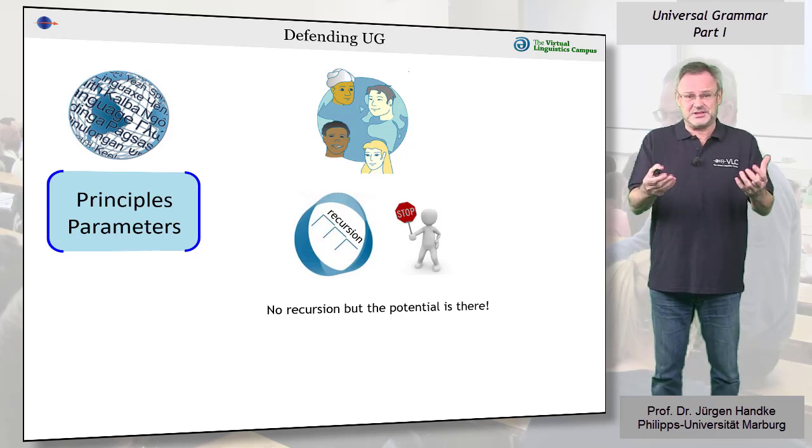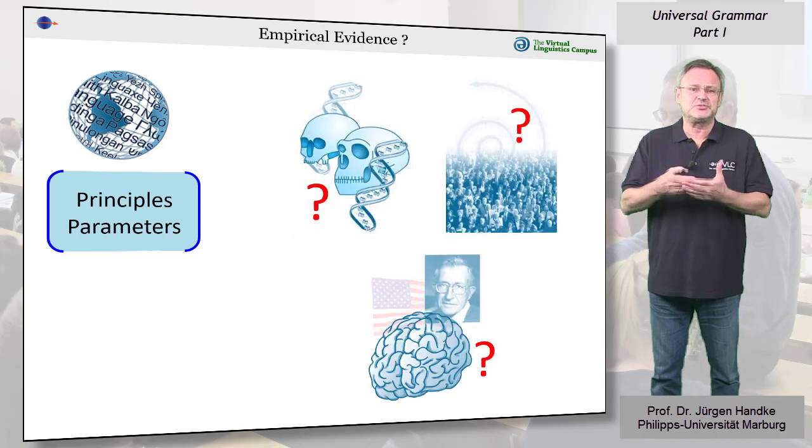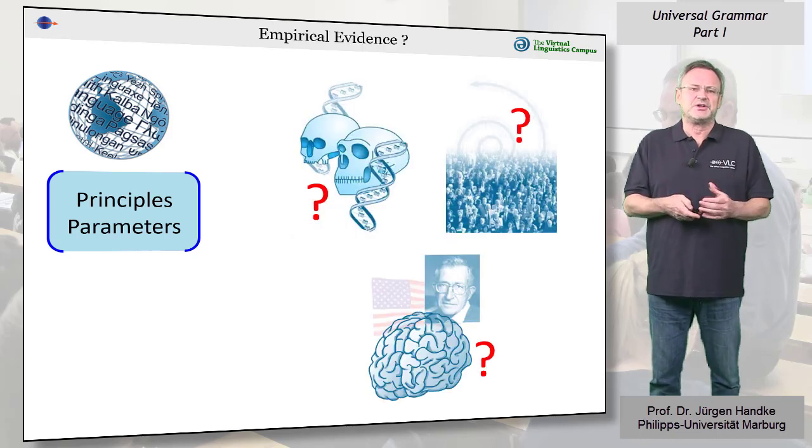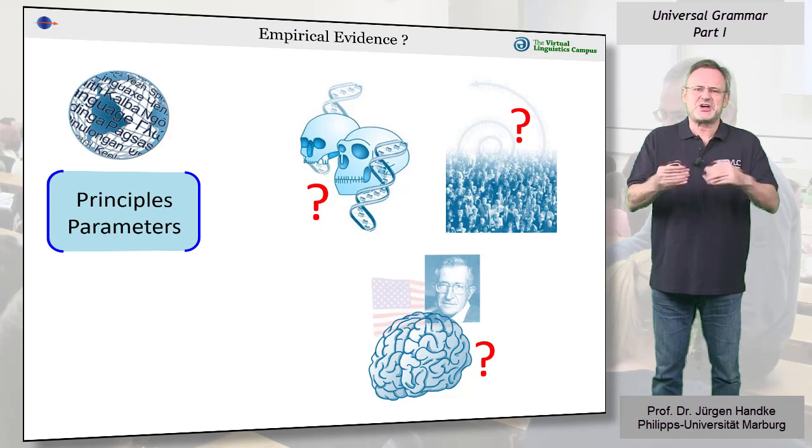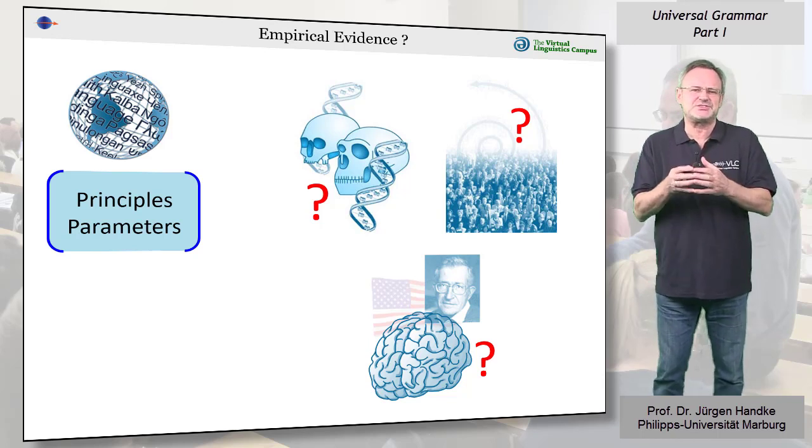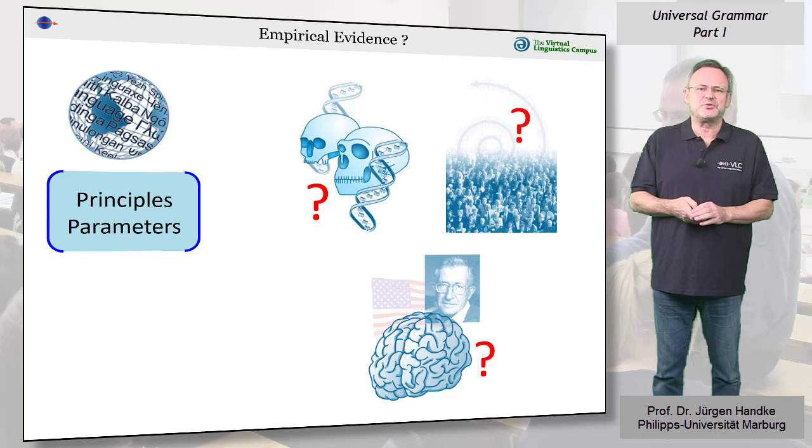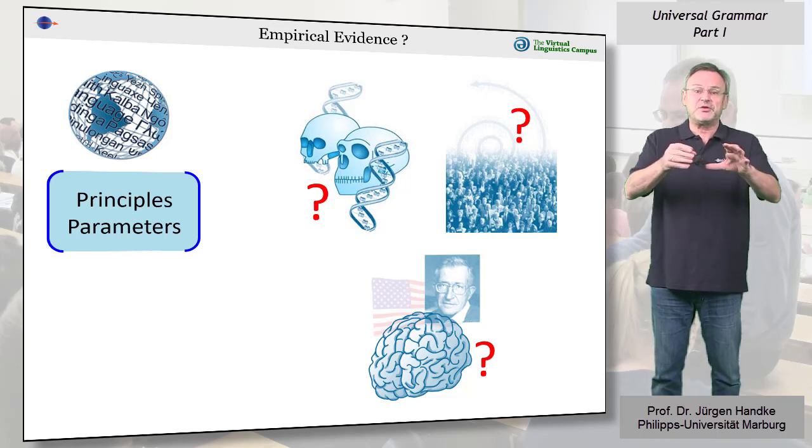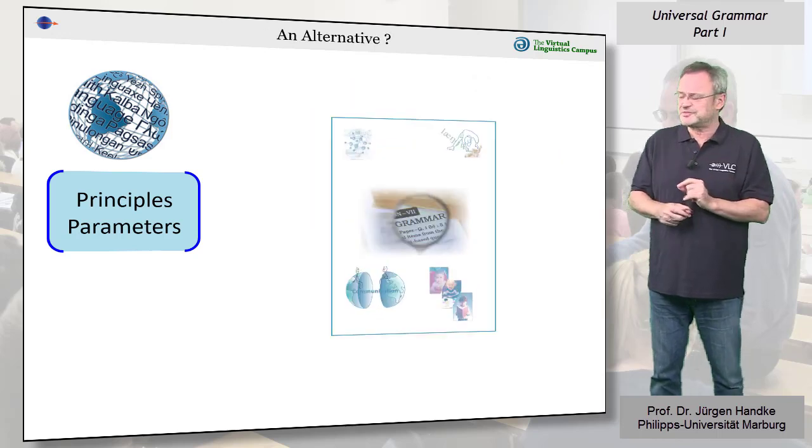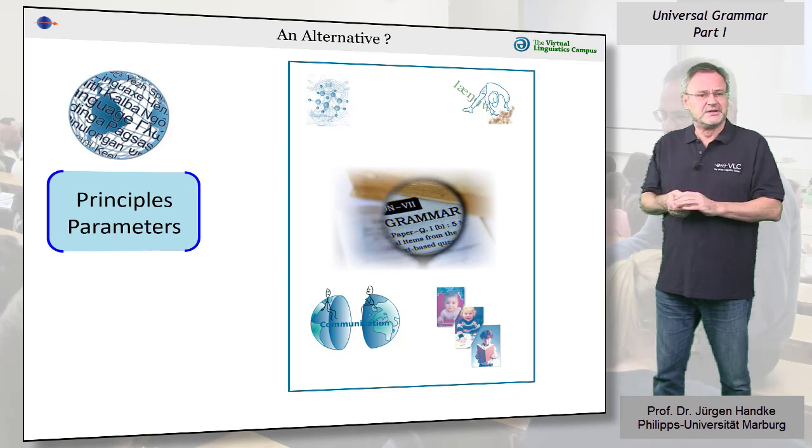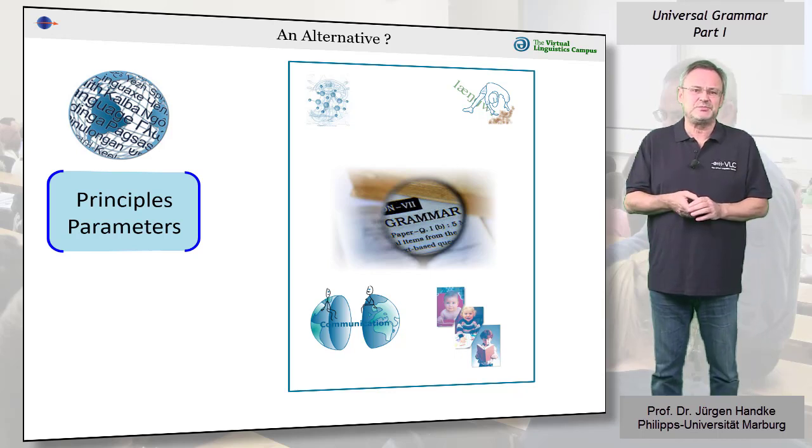This line of thinking makes universal grammar difficult to test in practice and contributes to the overall empirical inadequacies of the theory. Many researchers are becoming increasingly dissatisfied with a completely formal language approach such as universal grammar. With more and more evidence rebutting Chomsky's theory, a paradigm shift may be underway. This paradigm shift will be discussed in a second video on Universal Grammar.